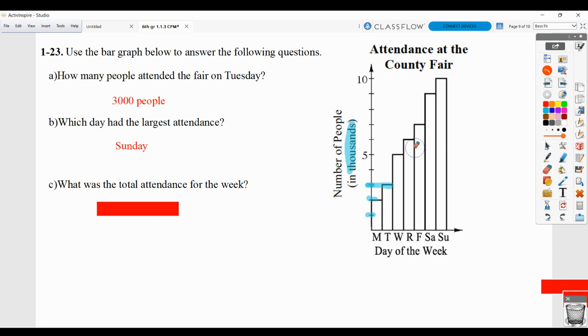And then what's the total attendance for the week? Again, I should see the work shown. So I should see that you added 2,000 plus 3,000 plus 5,000 plus 6,000 and so on to get a final answer of 42,000. So make sure you show that work.